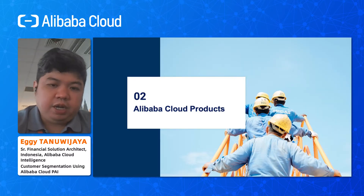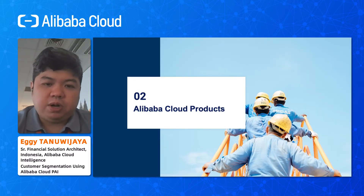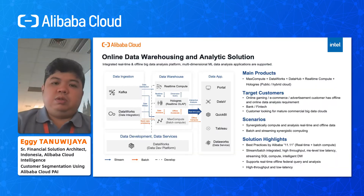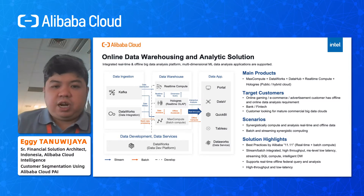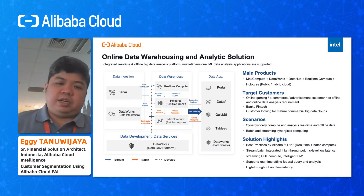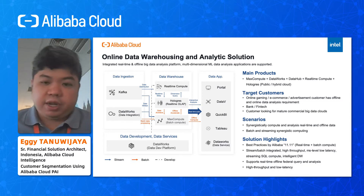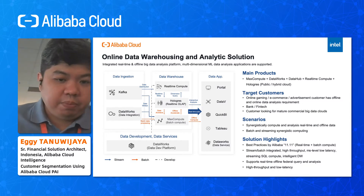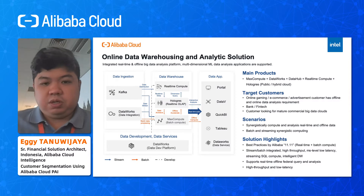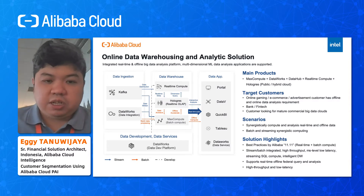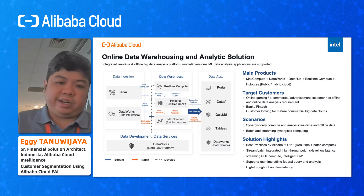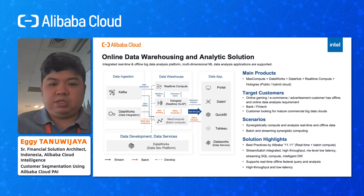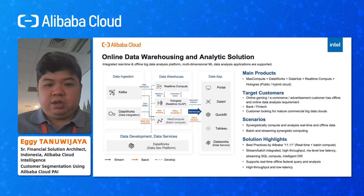For the Alibaba Cloud products on part two, for the online data warehousing and analytics solution, Alibaba Cloud has components covering data ingestion, data warehouse, data app, and data services. For data ingestion, we can extract and load our data using tools like Kafka and Data Integration.